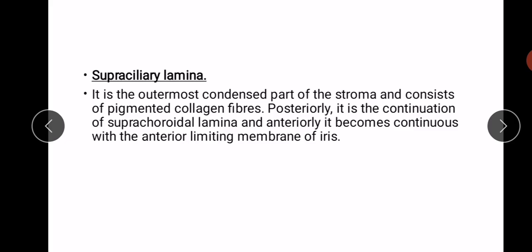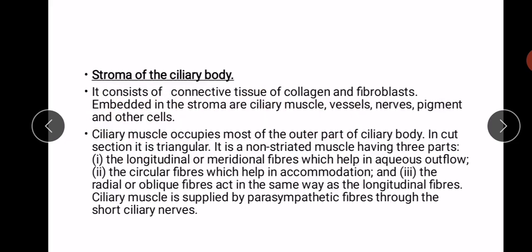Posteriorly, the supraciliary lamina is the continuation of the suprachoroidal lamina. Anteriorly, it becomes continuous with the anterior limiting membrane of the iris, which also contains pigmented cells. The stroma of the ciliary body consists of connective tissue, fibroblasts, ciliary muscle, vessels, nerves, pigments, and other cells.